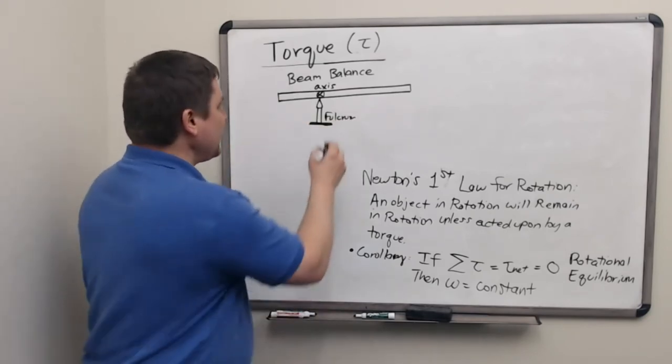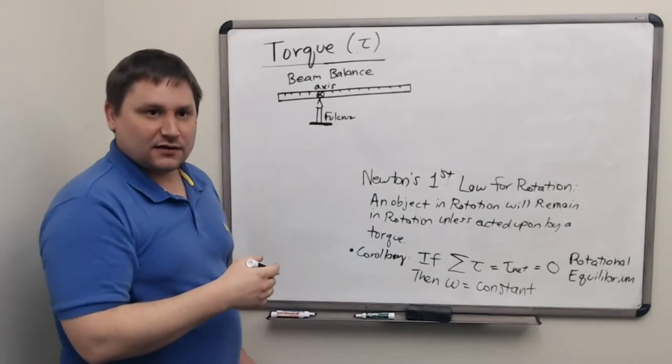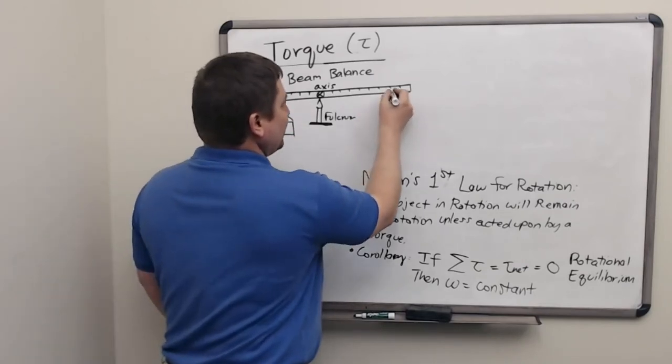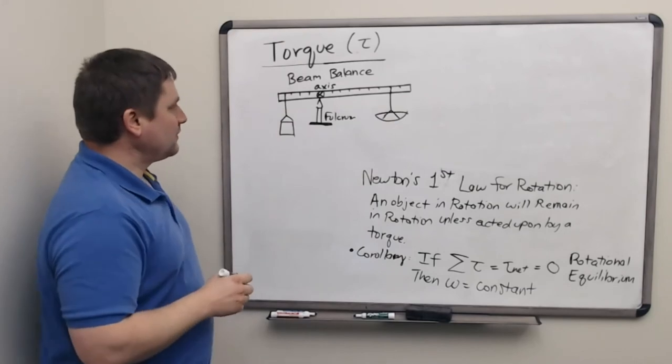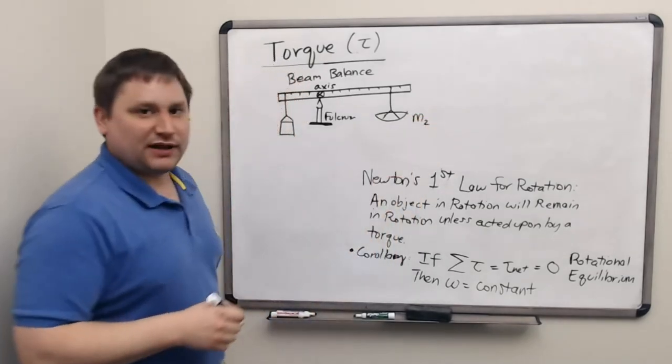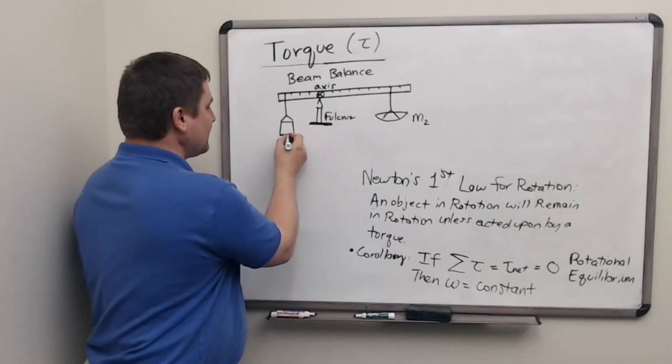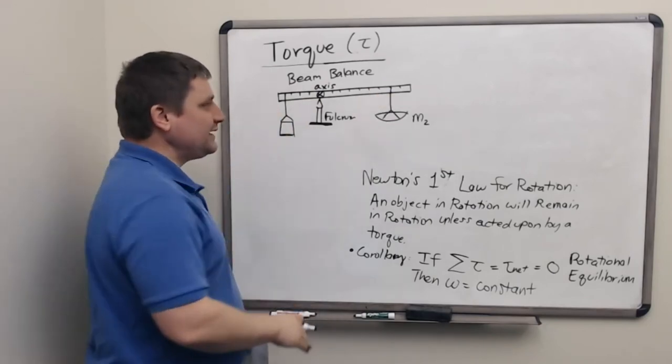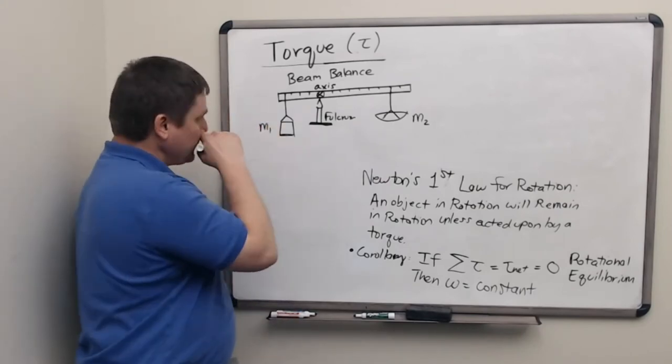It's called a fulcrum. The beam is usually marked out with measurements so that weights or unknown masses can be hung from different places. Generally, the way this works is an unknown mass will be placed in a pan that's hung from a specific mark. Then on the other side of the beam balance, a set of standardized masses will be hung and possibly adjusted left or right until the beam is completely stationary and motionless.